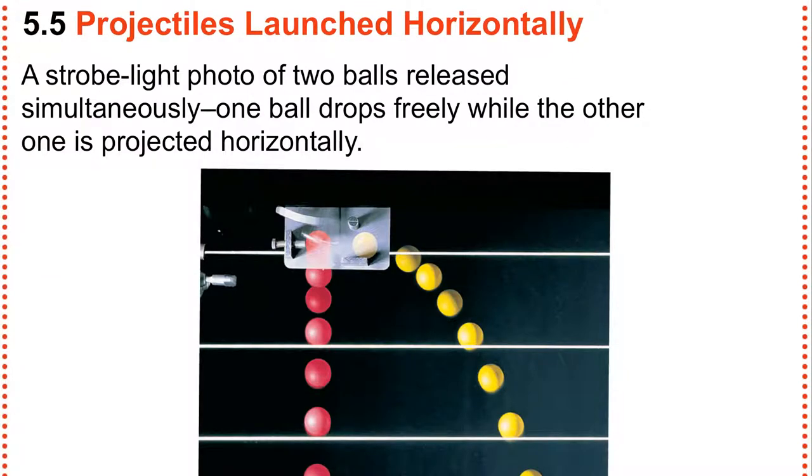So here are two balls. One is launched, and the other is dropped at the same moment. And you're going to see a strobe light that's going to show its location at various time intervals. And every interval, you're going to see that the ball is falling the same amount down, independent of whether it's going out.